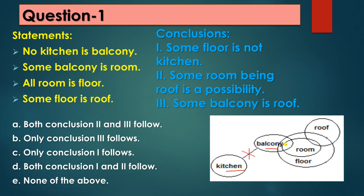'Some balcony is room' — this one is the balcony and this one is the room, and the diagram shows some balcony is room. Next, 'all room is floor' — the complete room is inside floor, so you put a big circle for floor. Next, 'some floor is roof' — this is the floor and this is the roof, so this diagram represents some floor is roof.